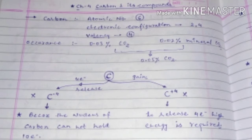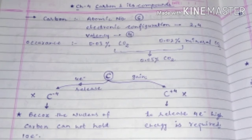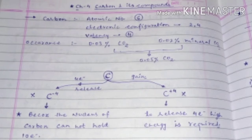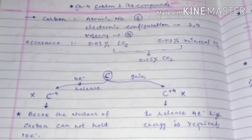Now we will discuss why carbon cannot form an ionic compound. Carbon cannot form an ionic compound because carbon neither releases nor gains electrons. Carbon requires four electrons to get a noble configuration like neon, or needs to release four electrons to get a noble configuration like helium. So it is not possible for carbon to become a cation or an anion.